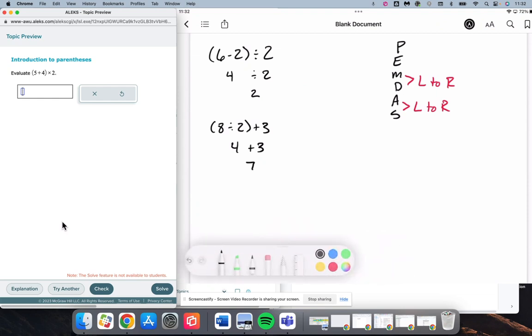5 plus 4 times 2. 5 plus 4 is going to give us 9. Times 2 is going to be 18.